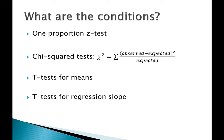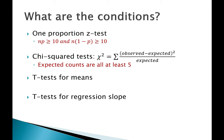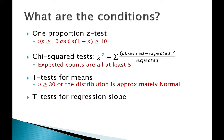The conditions for inference aren't on your reference sheet but follow naturally. For a one-proportion z-test: n times p greater than 10, and n times (1 minus p) greater than 10. For a chi-squared test: all expected counts must be at least five. For a t-test for means: sample size at least 30, or the distribution is approximately normal — check by plotting your data. For the slope, use residual plots to check for linearity, constant variance, and normality of residuals.